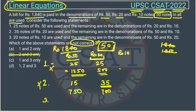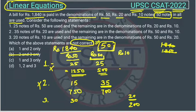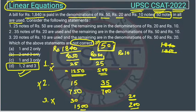For the third case, 20 notes of rupee 10 are used, giving 20 into 10 equals 200 rupees. The remaining 30 notes, if all allotted to rupee 50, give 30 into 50 equals 1500. Total is 1500 plus 200 equals 1700 rupees, which is also not equal to 1840. So all three cases are not possible, and the answer is option D.